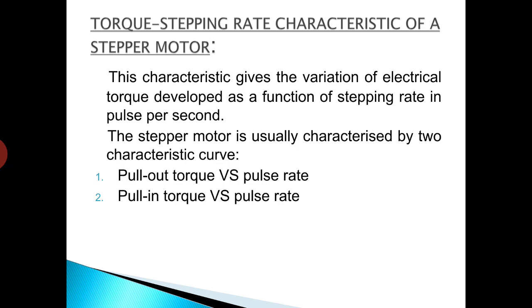Now coming to the very important topic: the rotor torque versus stepping pulse rate characteristics of the stepper motor. This characteristic gives the variation of electrical torque developed as a function of stepping rate in pulses per second. The moving rotor gets less time to drive the load from one position to the next with increasing stepping rate, so the driving torque reduces with increasing stepping or pulse rate, as shown in the figure in the next slide.